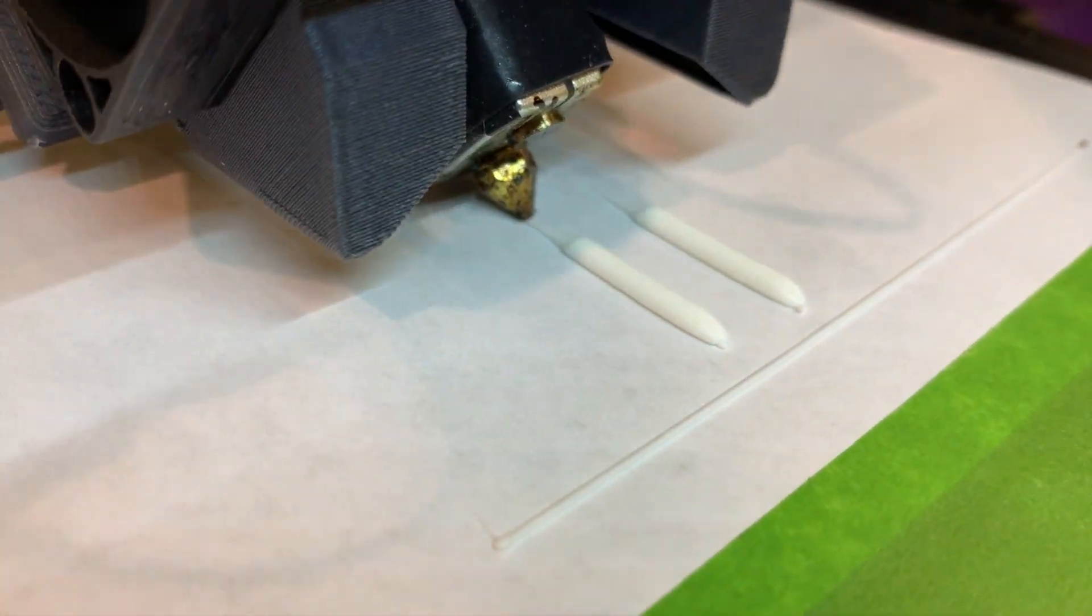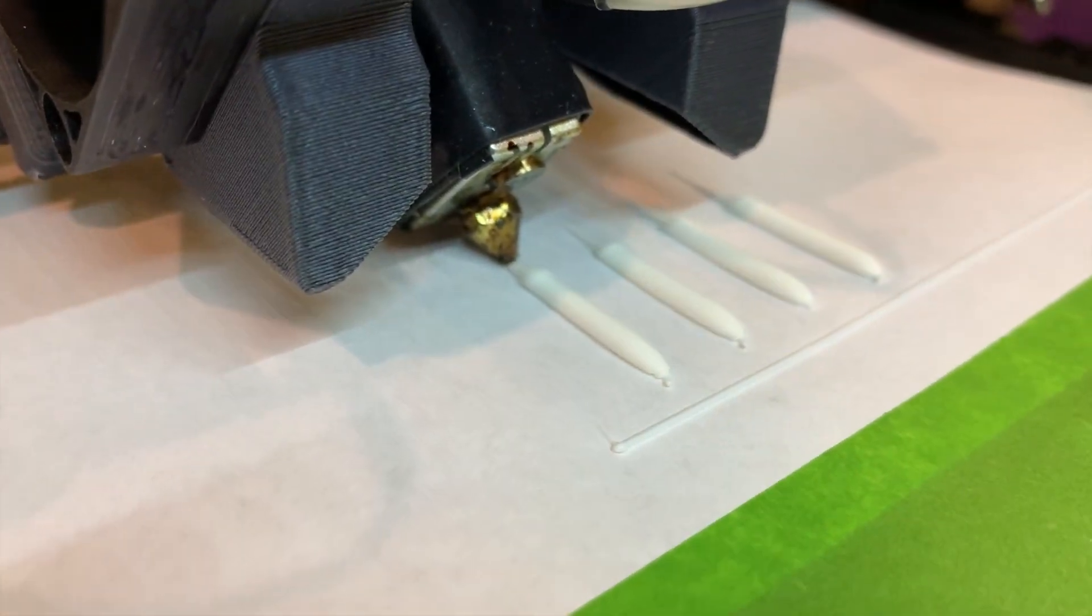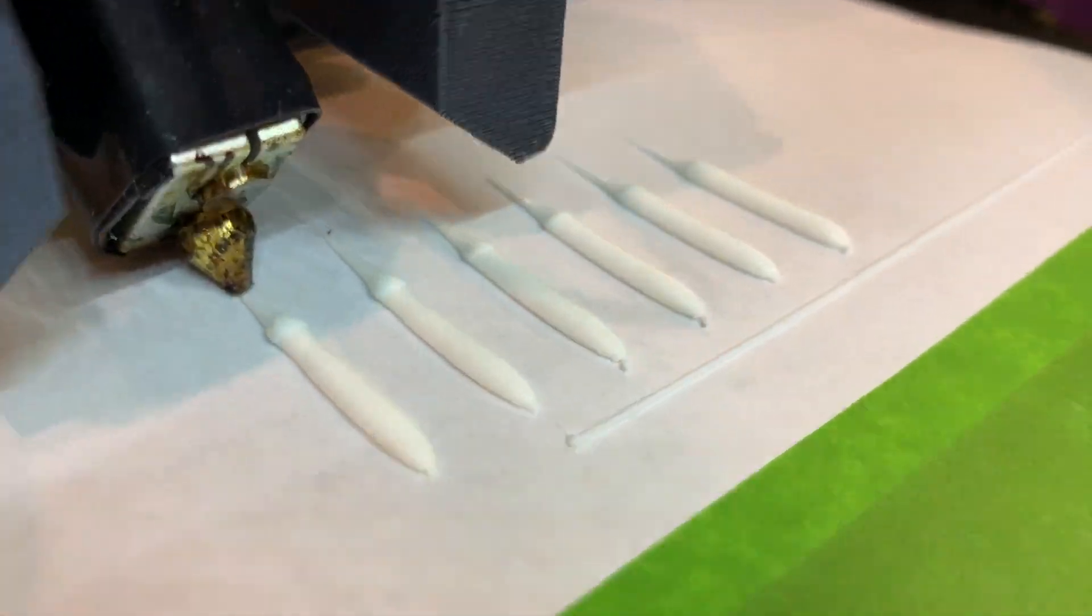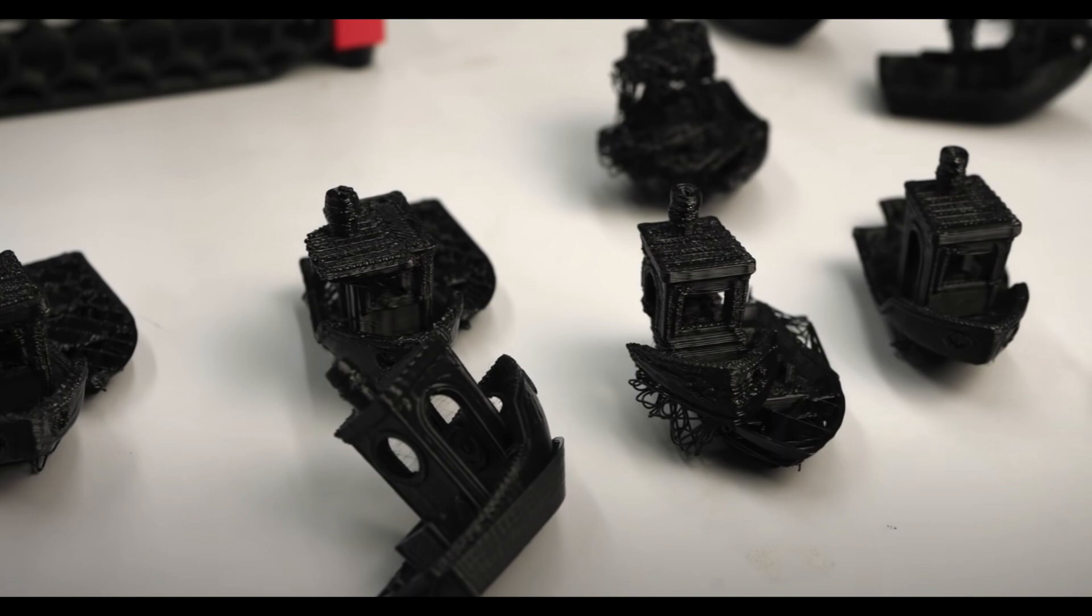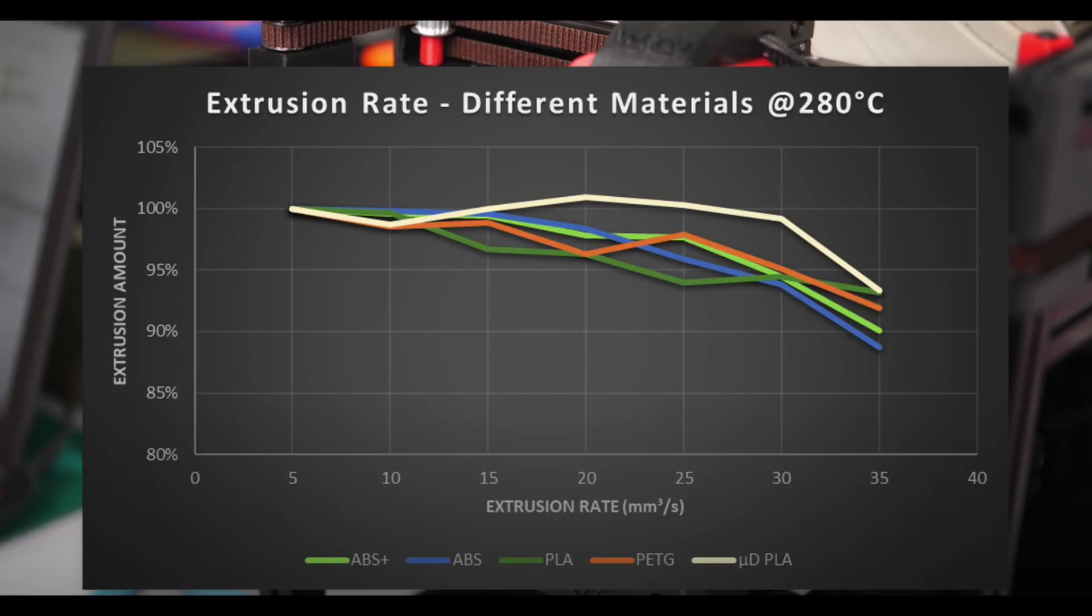What does this print test tell us about the properties of filaments printed at different temperatures and flow rates? It was inspired by a recent video by Stefan of CNC Kitchen, where Benchy print failures led him to test how different materials behave across a range of extrusions and speeds.